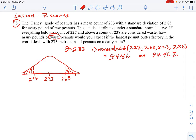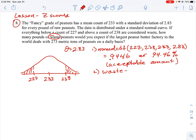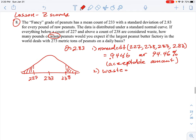So that's the amount of peanuts that are acceptable. This is the acceptable amount, so that means the amount that is actually unacceptable, which is the waste, is equal to 1.00 minus 0.9446, which equals 0.0554 or 5.54% are wasted.